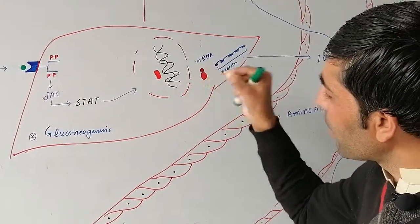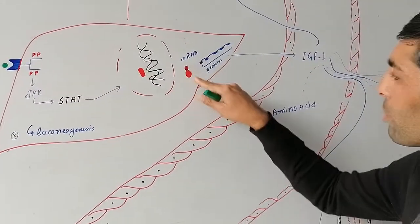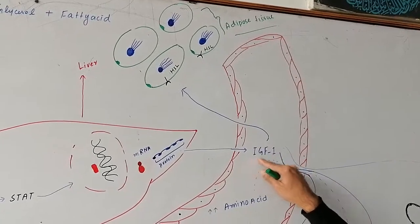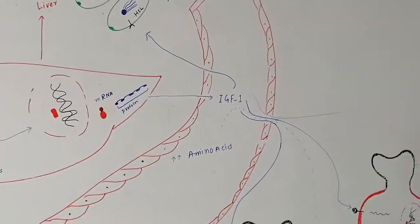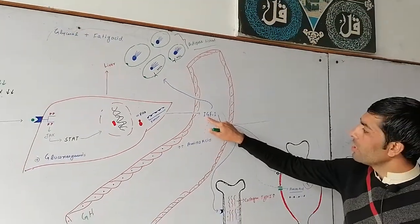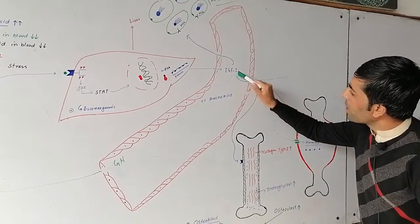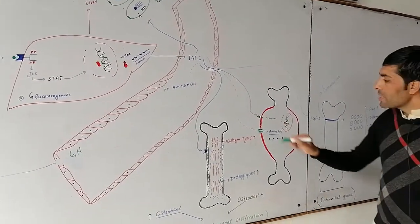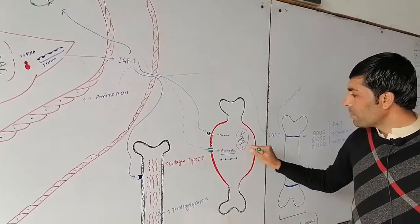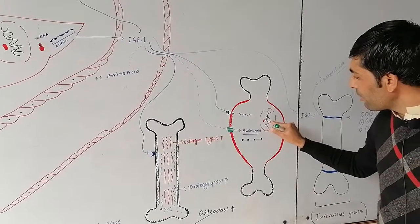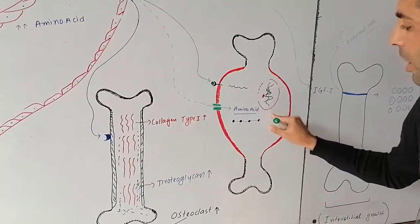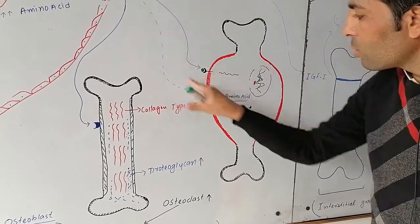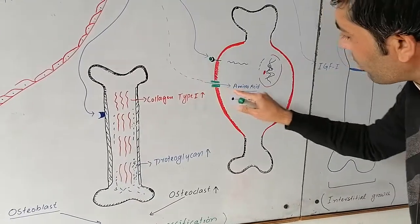This activates STAT factors which act on DNA, causing specific gene transcription. Messenger RNA is produced, which ribosomes translate into protein, specifically insulin-like growth factor type 1, or IGF type 1.